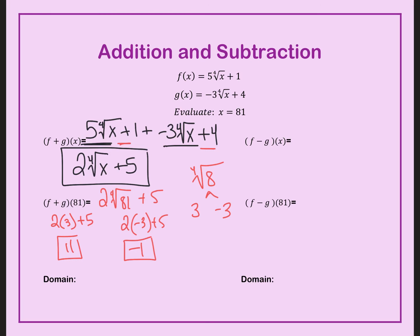With the fourth roots — like square roots — my domain is not all real numbers this time. My domain is x is greater than or equal to zero, written as zero to infinity in interval notation. Remember, the domain has to be in both functions. Anytime you have a square root or fourth root, the domain is going to be from zero to infinity.